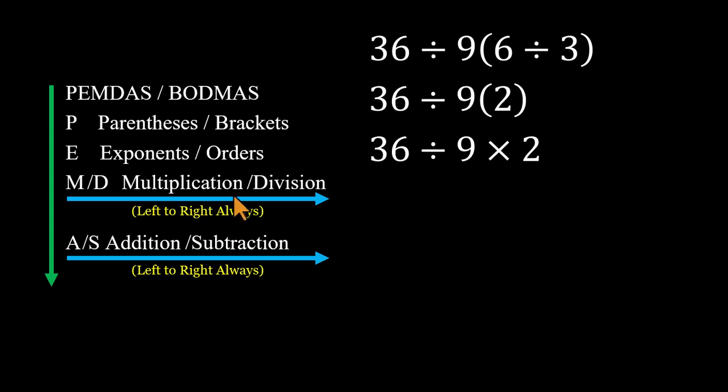Multiplication and division share equal priority, so we go left to right. Start from the left, 36 divided by 9 equals 4, then multiply, 4 times 2 equals 8. That's the correct answer.